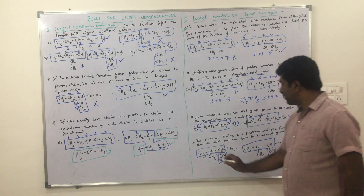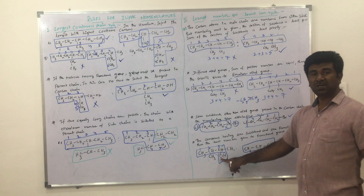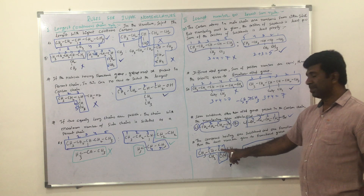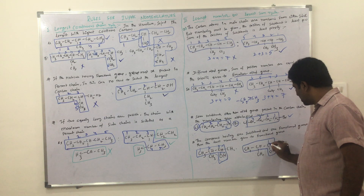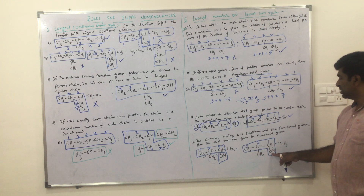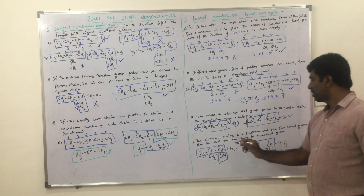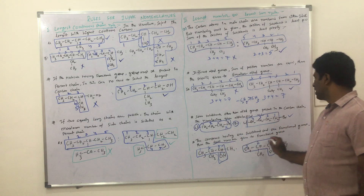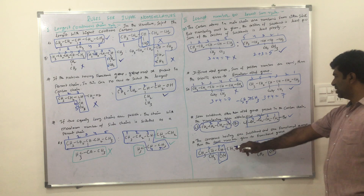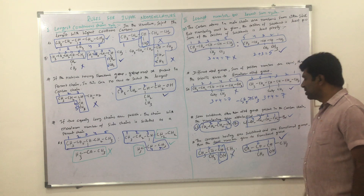So here the numbering goes one, two, three — the OH group is presented at the third carbon. Alternatively, numbering the other direction: one, two, three — the functional group is at the first carbon. The number given to the functional group must be at the least position. So this structure where the functional group has the first number is the right structure, and the other where it has the third number is the wrong structure.